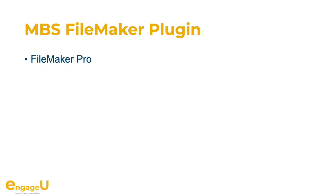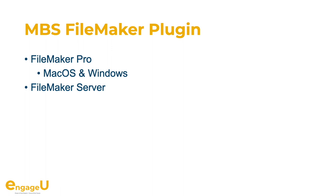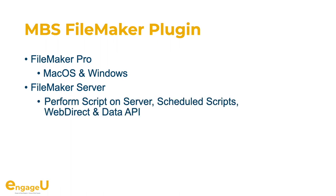The MBS FileMaker plugin can be used in FileMaker Pro as well as Claris Pro on the client side on Mac and Windows. You can use the plugin on the server for both FileMaker Server and Claris Server. You can use it with Perform Script on Server triggered scripts, with scheduled scripts, with Web Direct and Data API on macOS, Windows, or Linux. FileMaker Cloud from Claris doesn't support plugins, but you can find plenty of other companies to host your FileMaker server and install a plugin.